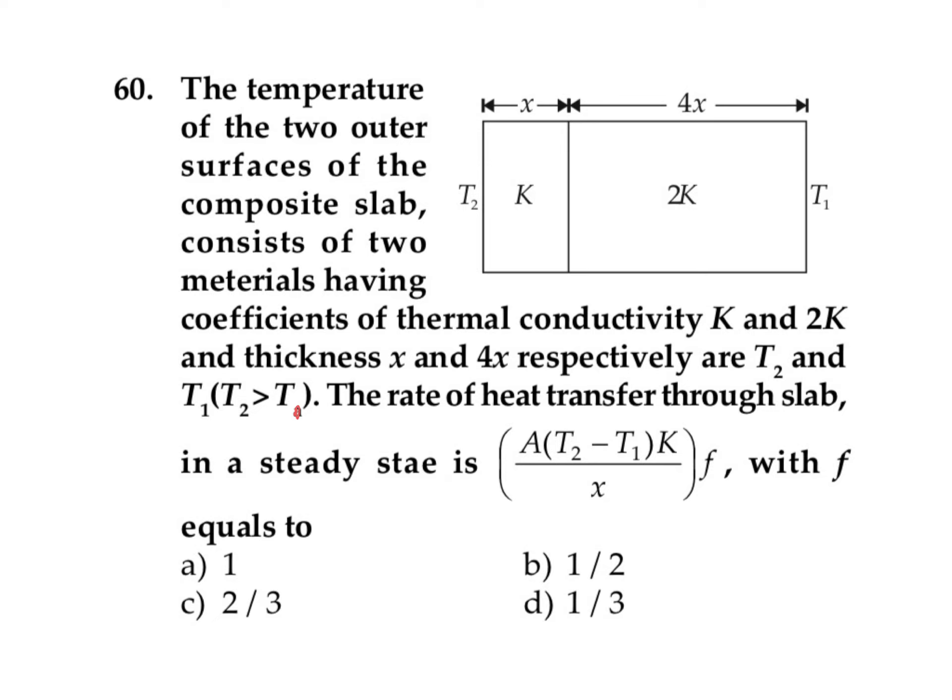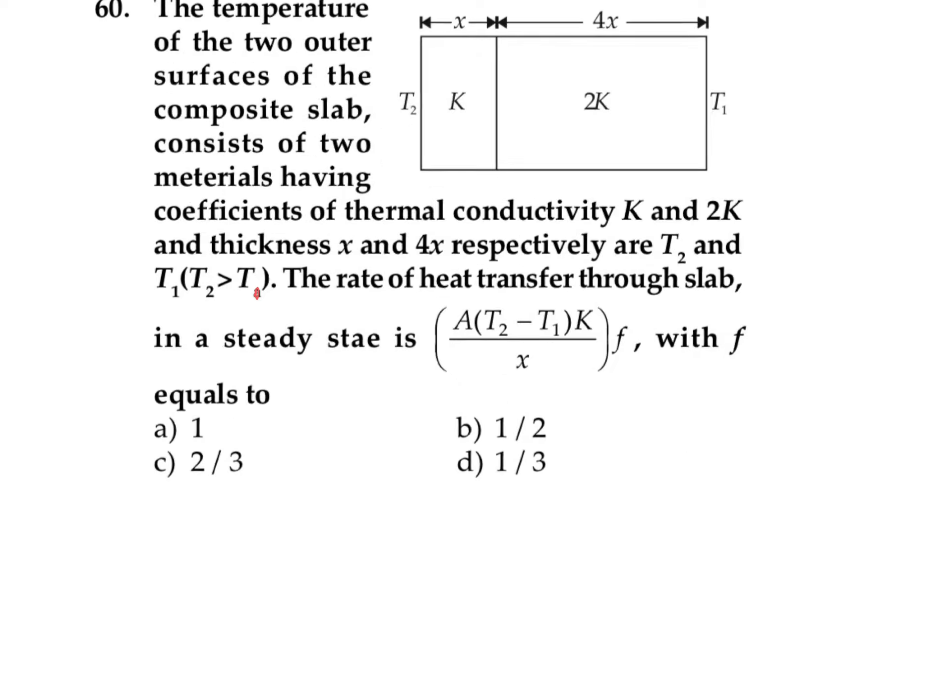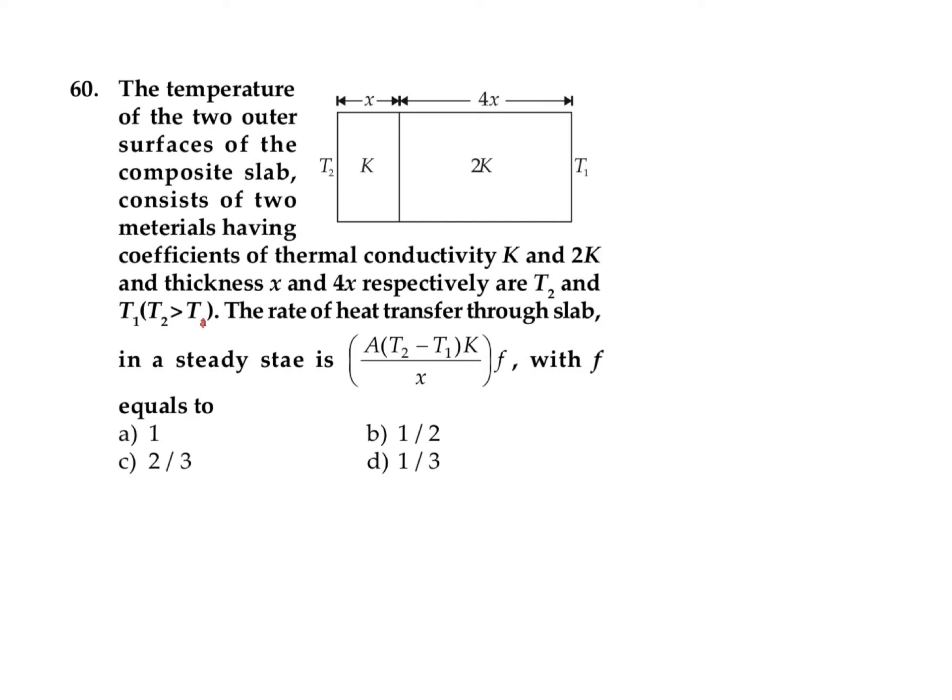times f, where f equals what we need to find. We need to find how much heat energy is flowing through this combination. For solving this type of question, we can consider it like two resistors R1 and R2 connected in series.